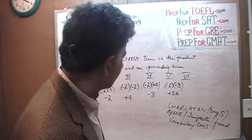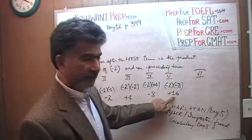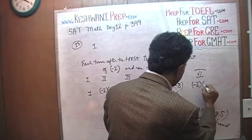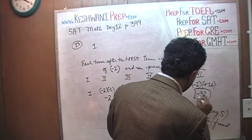And finally, the last term, the sixth term that we are looking for, is going to be the term that came before it times negative 2. So, negative 2 times positive 16. Negative 32 is our answer.